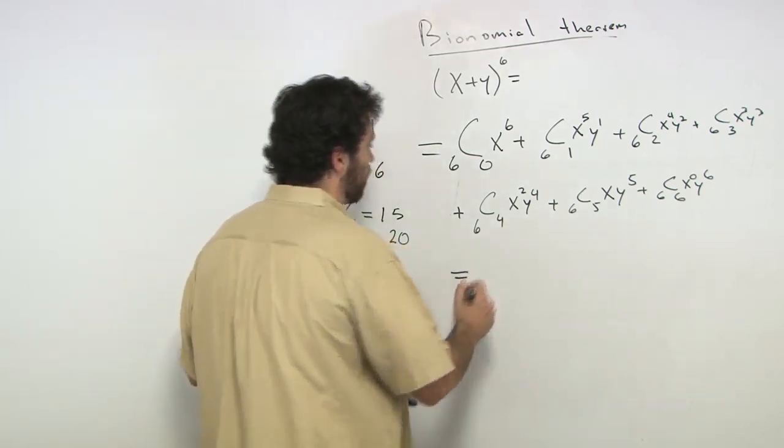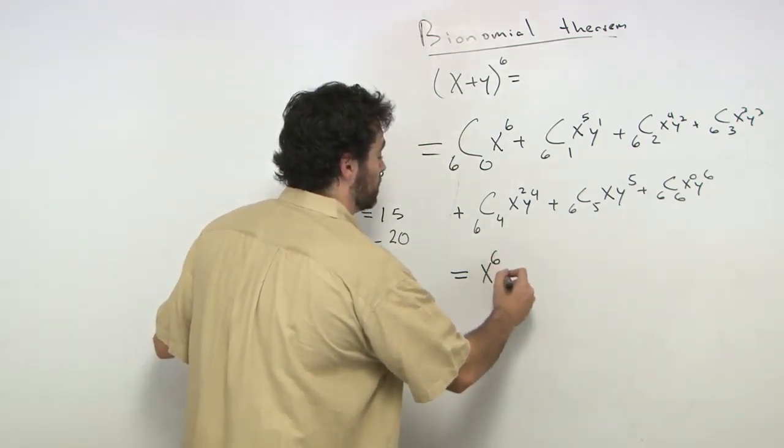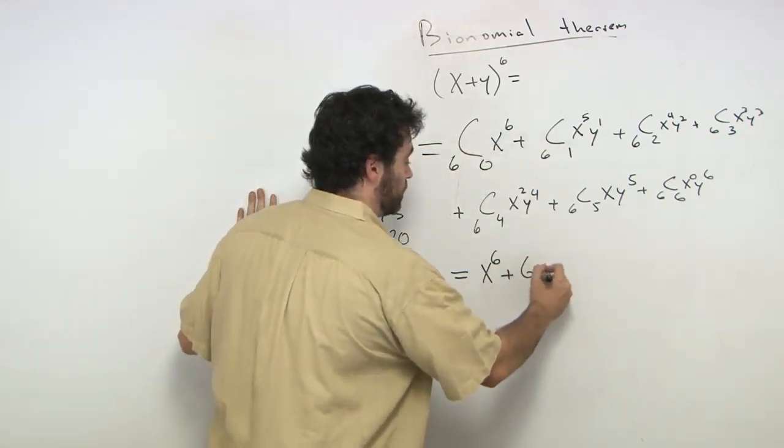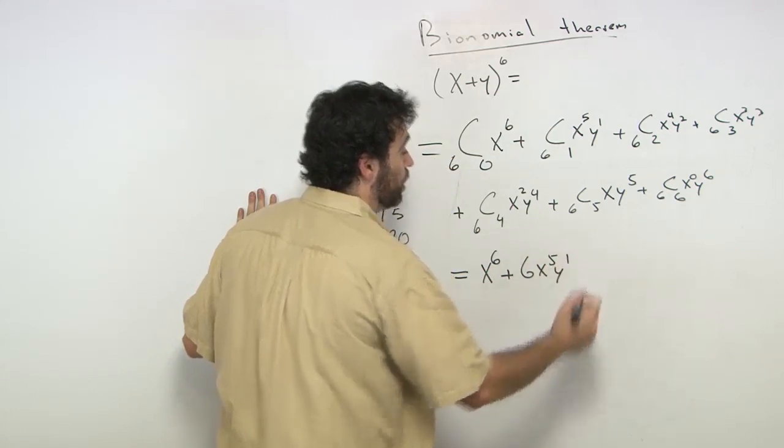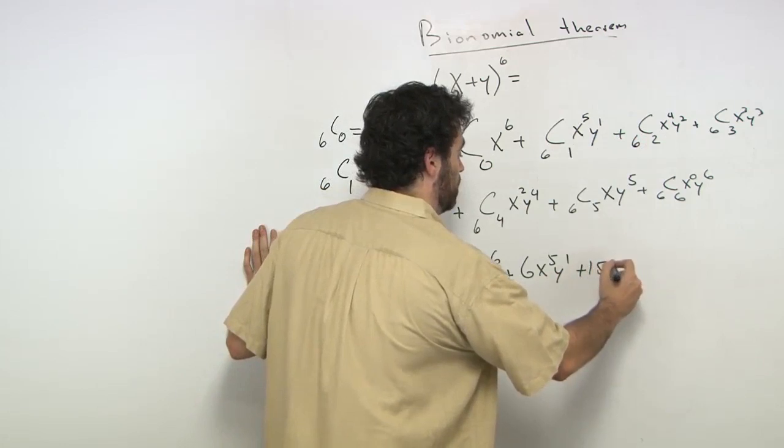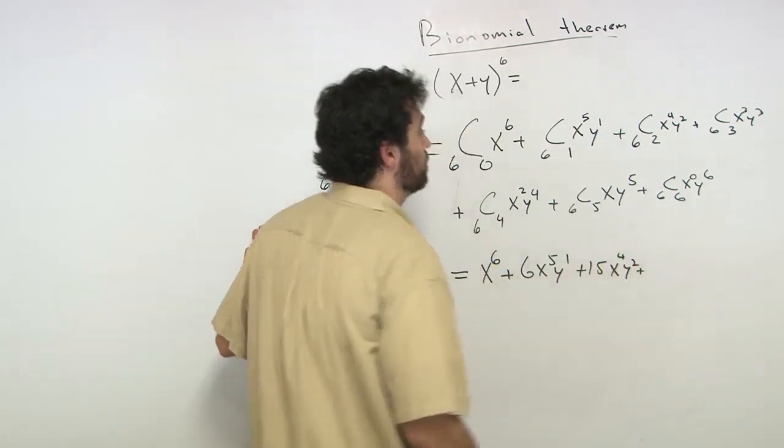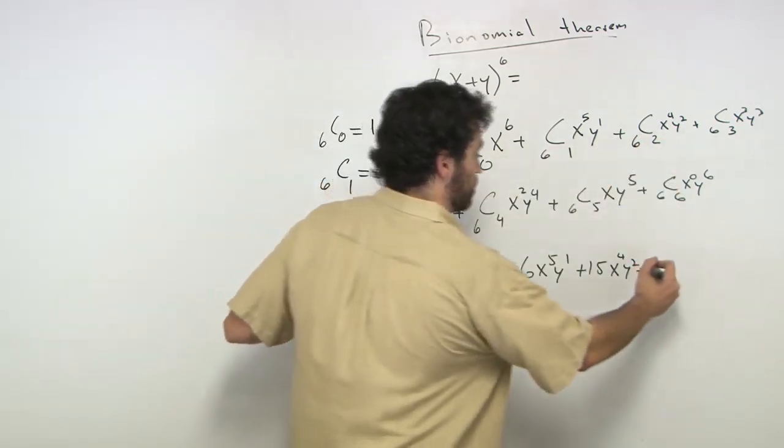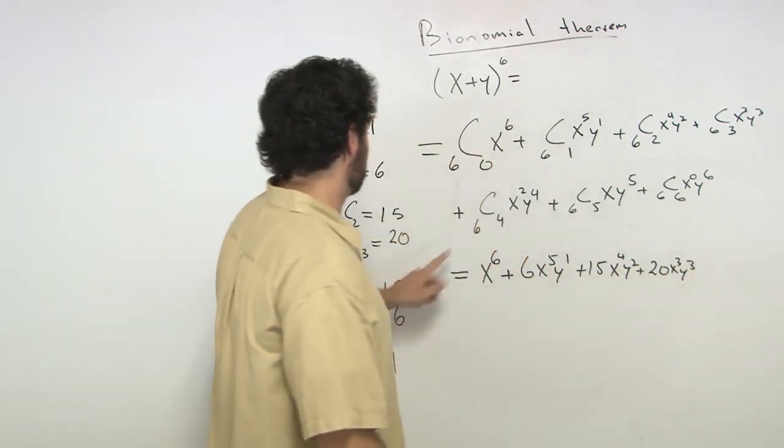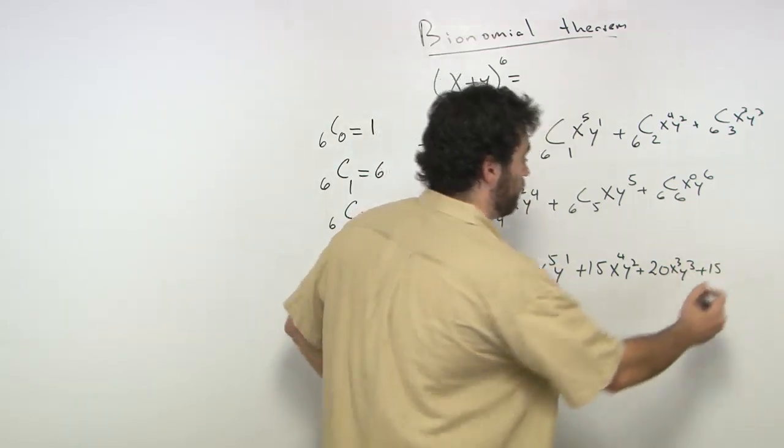So let's write this out for ourselves. We know that this is 1, so we get x to the 6 plus 6c1 is 6, so we get 6x5y1. 6c2 is 15, so we say that's plus 15x4y2, plus 6c3 is 20, so we say that's 20x3y3. 6c4 we know is 15 again, so we get 15x2y4.